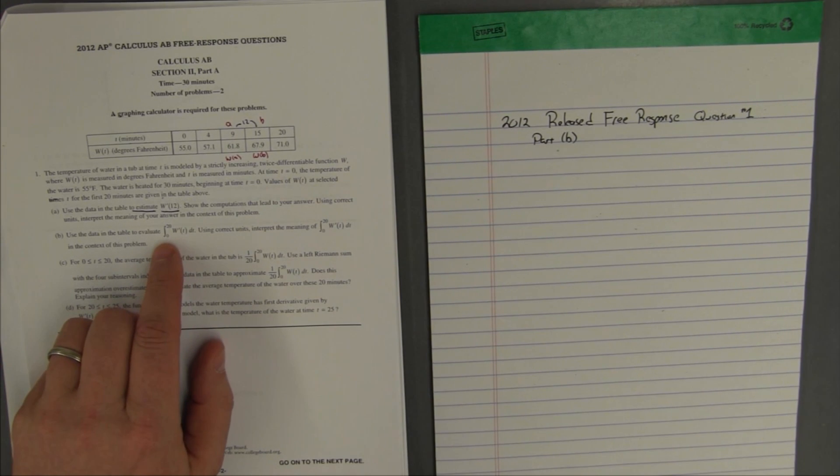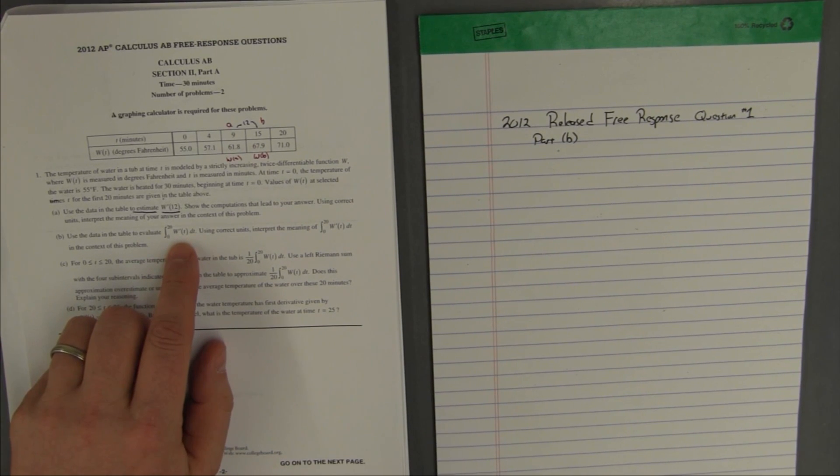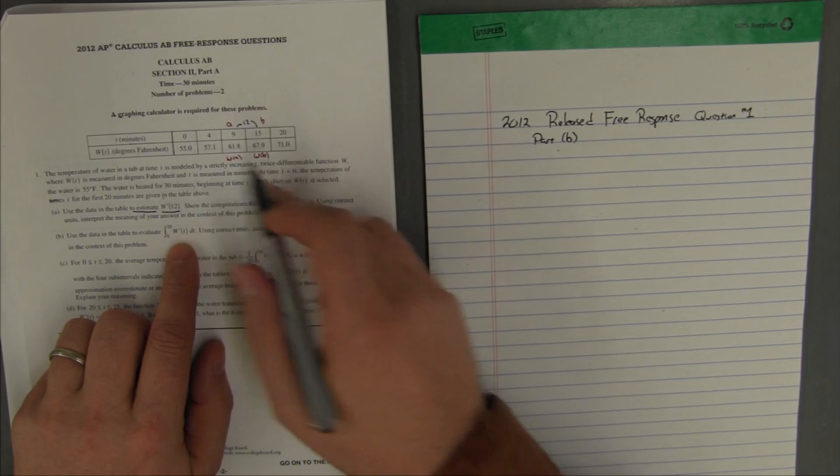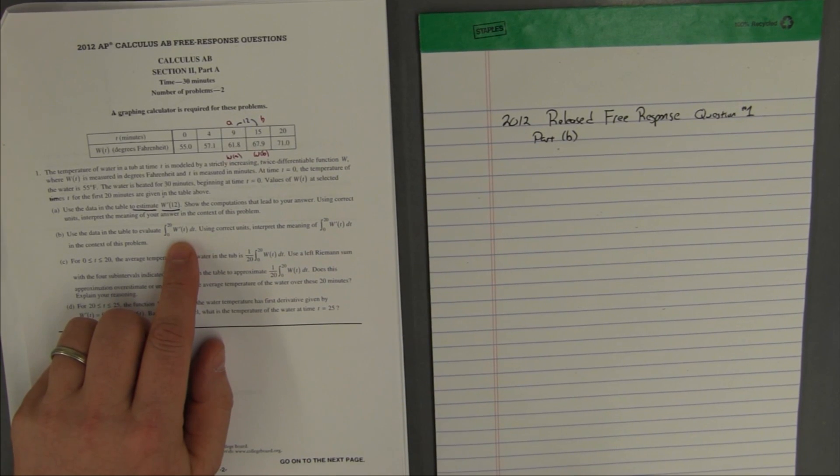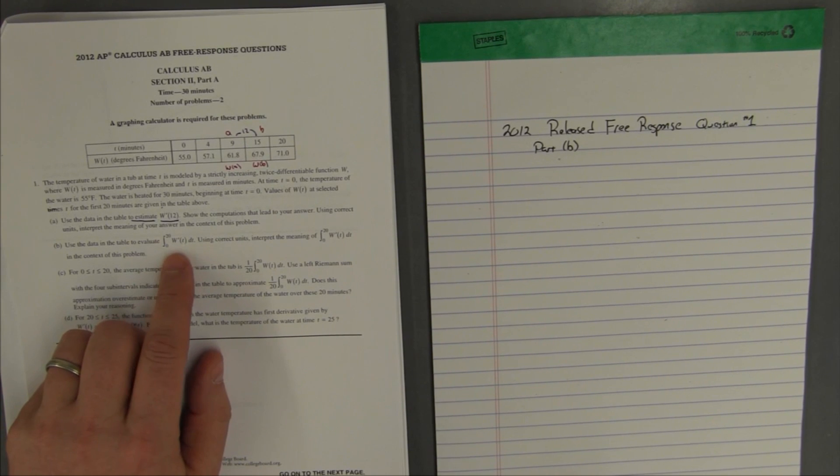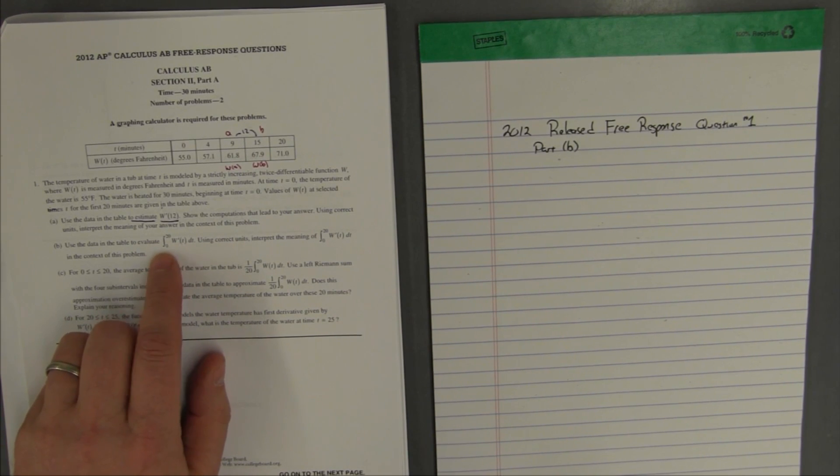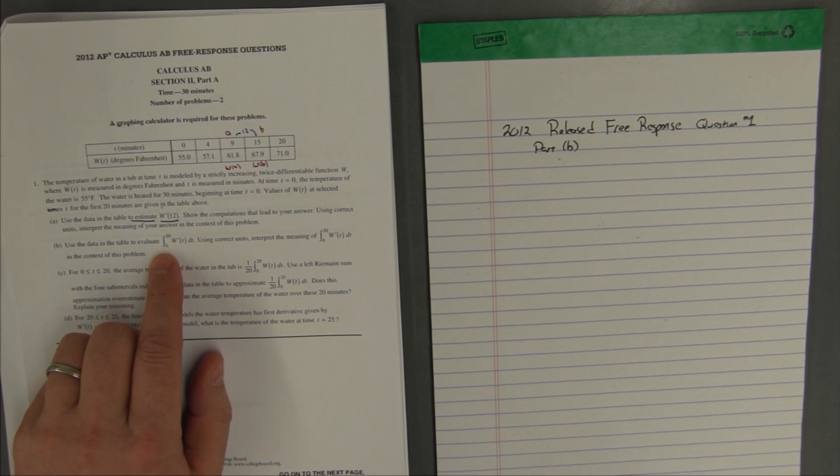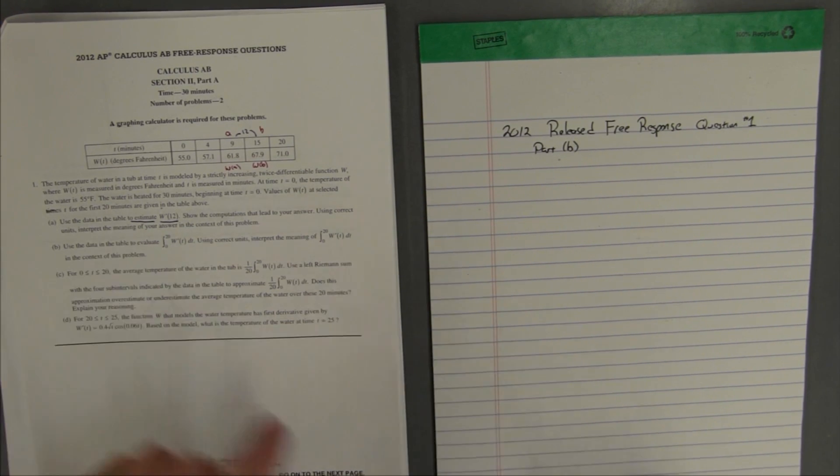So, they're asking us for the integral of a derivative. Now we don't have the derivative up here. We don't have any information at all about w prime. But what we do need to understand is that the integral and the derivative are related to each other. When they're asking us how the derivative and the integral are related, this is a question about the fundamental theorem of calculus.